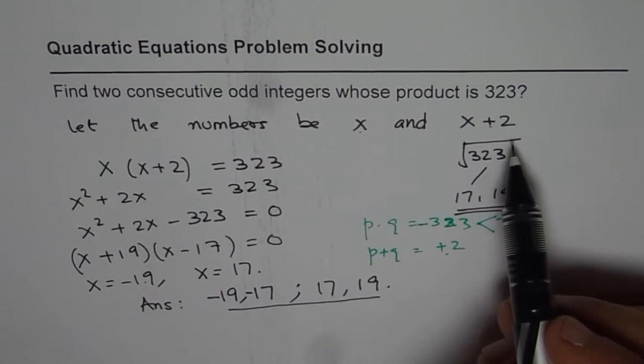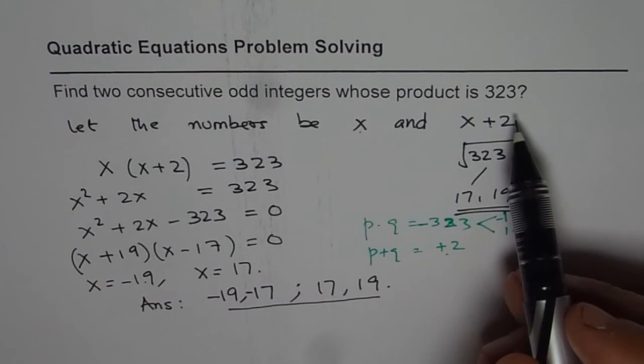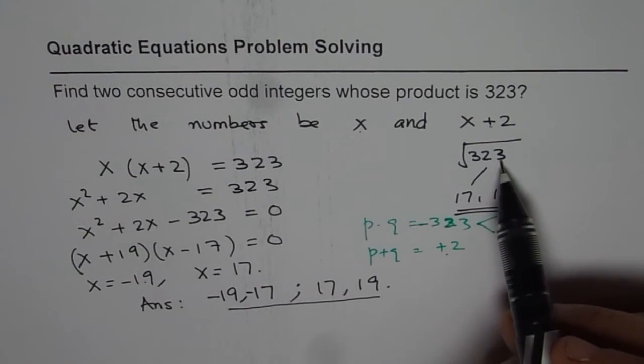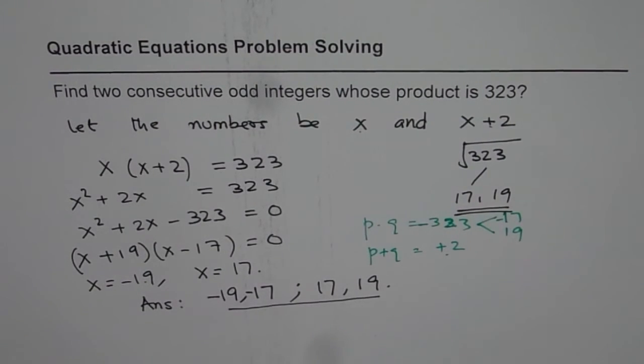So what I want to highlight here is that when we are talking about numbers which are very close or consecutive, you can approximately get the answer by square rooting. And then you know which numbers to work with. So this technique helps to find quick answer in the test.